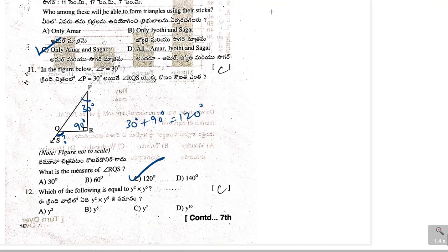Next, twelfth one, which of the following is equal to y square times y to the power of 7. This is of the form a to the power of m times a to the power of n which is equal to a to the power of m plus n. So, y square into y to the power of 5 which is equal to y to the power of 2 plus 5 that is y to the power of 7. So, option C is correct.